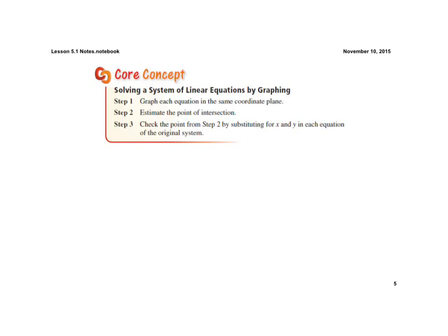The core concept here is to solve a system of linear equations by graphing. The first step is to graph each equation on the coordinate plane. Then you estimate the point of intersection and check by substituting into the two equations.